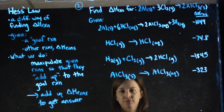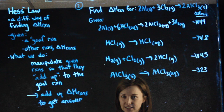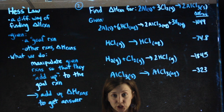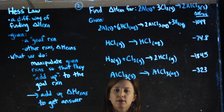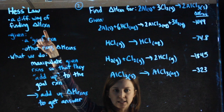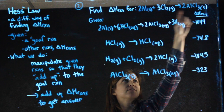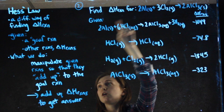Hess's Law is really fun — it's kind of like a puzzle. It feels tedious at first, especially because it's just a different way of finding delta H reaction. What we learned last time was products minus reactants; this is a different, way less efficient way of finding the same information. You'll always be given a whole boatload of information, including what I call a goal reaction.